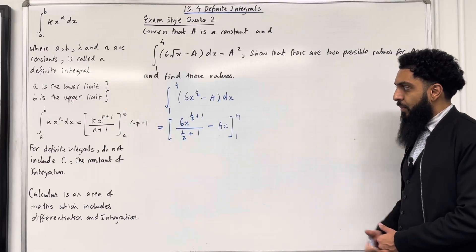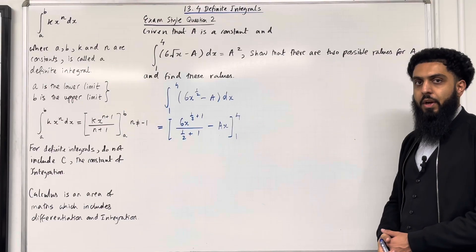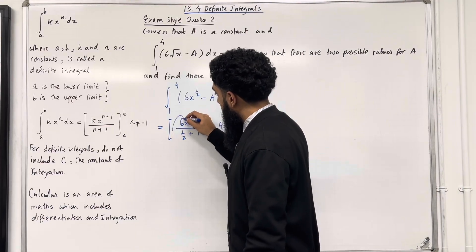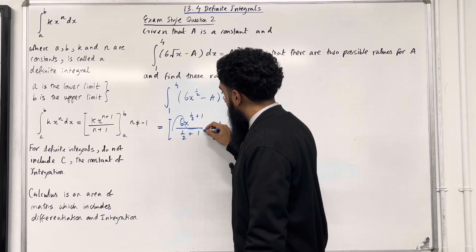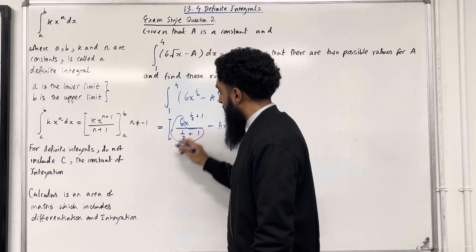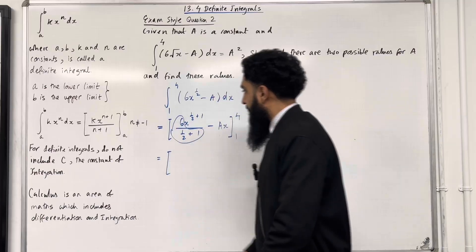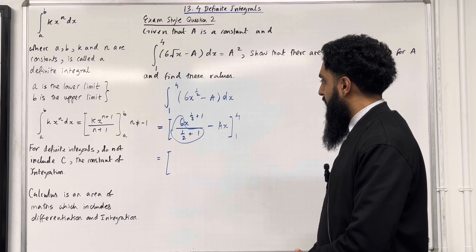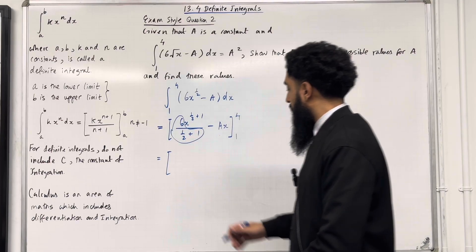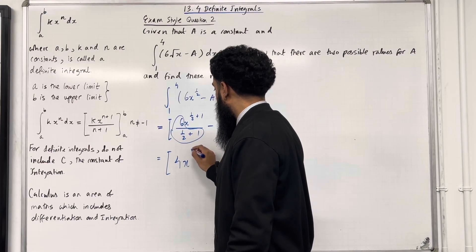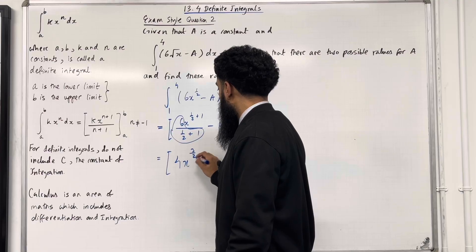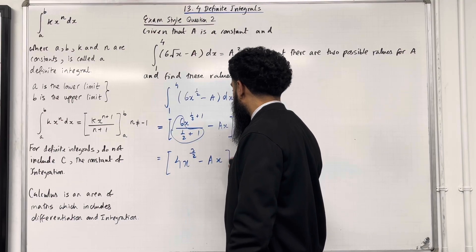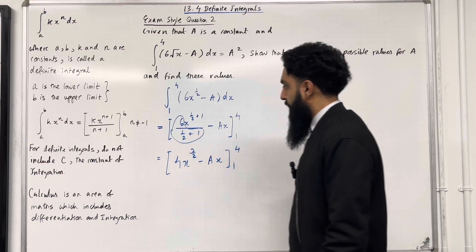For the first term, we can simplify the coefficient. We do 6 divided by 1 half plus 1, which gives 6 divided by 3 over 2, which is 4. So we have 4x to the power 3 over 2, minus ax, taking limits from 1 to 4.